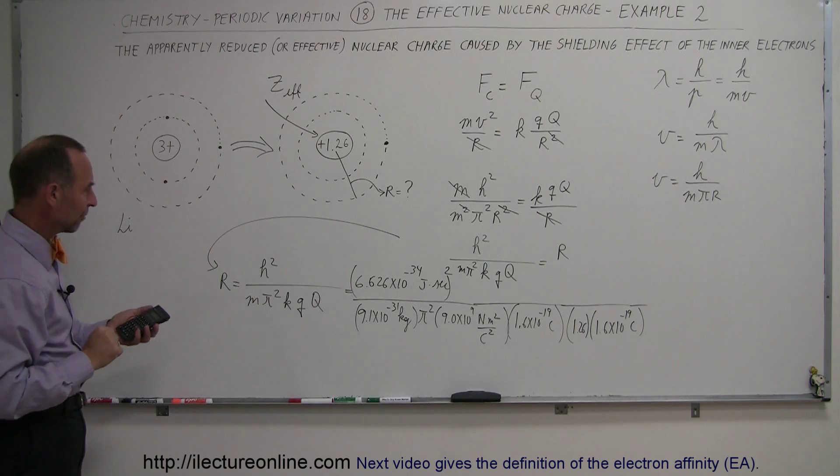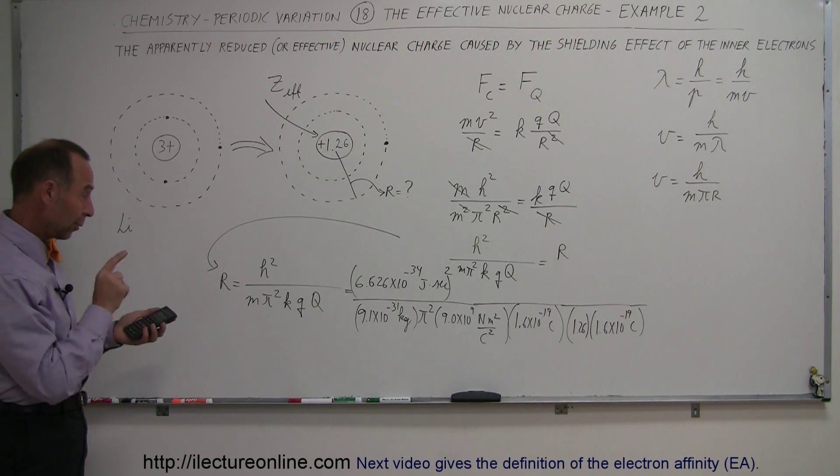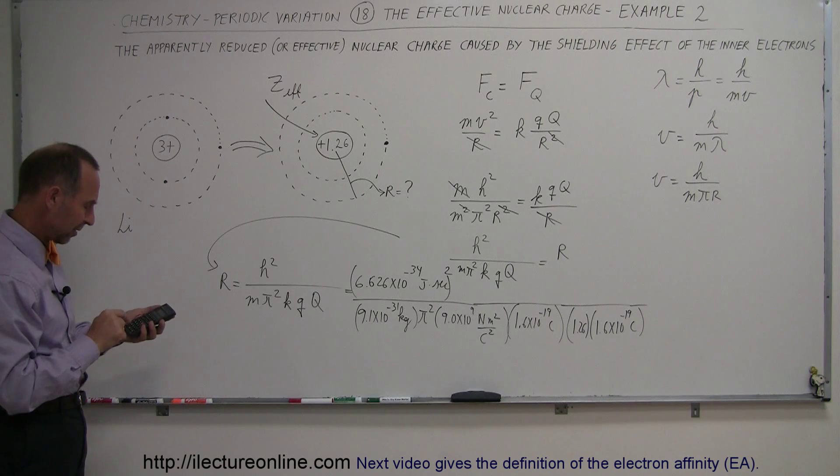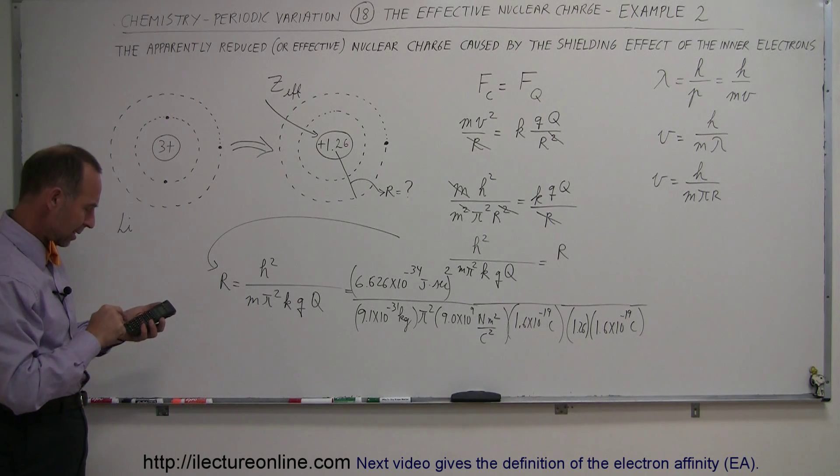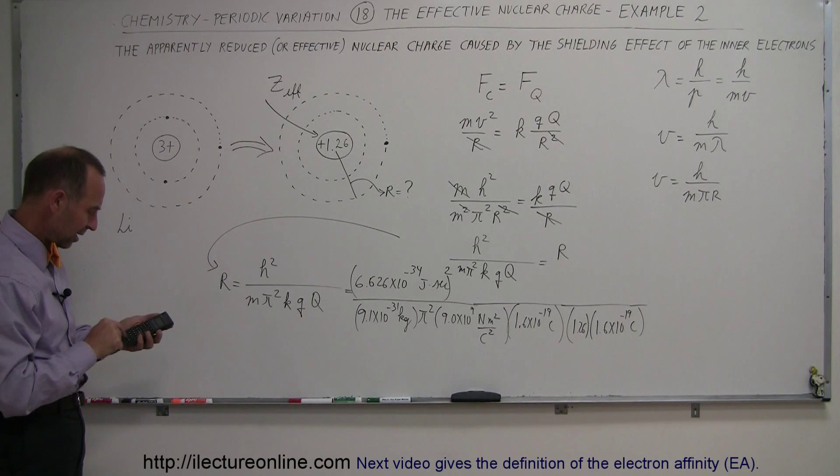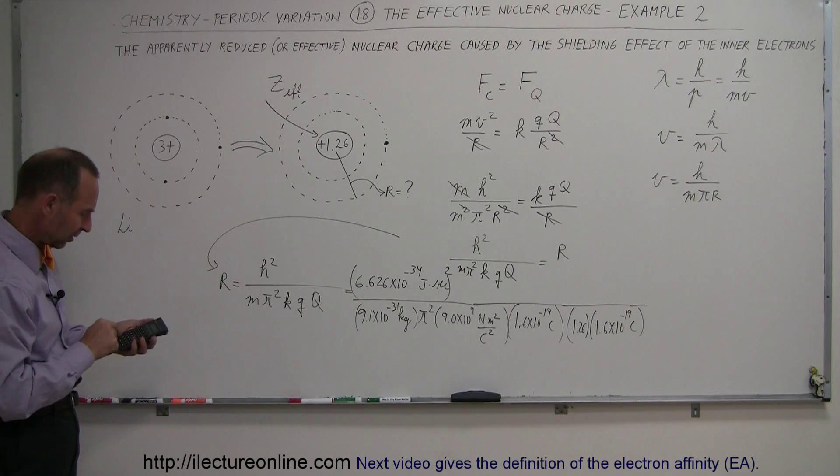So let's find out if we get the right value. 6.626 e to the 34 minus, we have to square that, we divide that by the mass, 9.1 e to the 31 minus, divide by pi squared, divide by 9 e to the 9th, divide by 1.6 e to the 19 minus, let's square that because we have two of them, and then divide by 1.26, and I get 168 picometers.